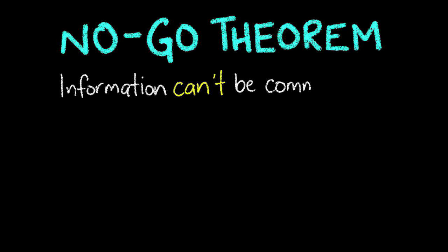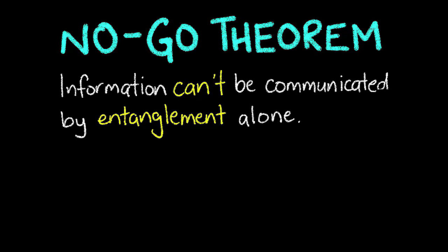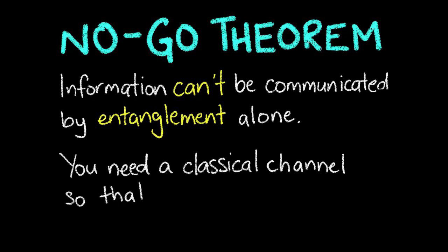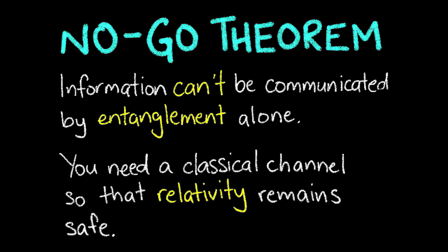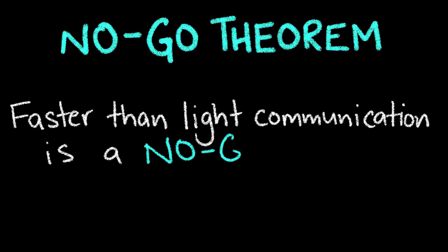We need a classical means of communication like the internet or a phone. A lot of people think that quantum teleportation means that we can communicate faster than the speed of light, but it's not true. Remember that we still need this classical channel to transport some of the information. This is all beautifully encapsulated in something politely called the no-go theorem, which says that information can't be communicated by entanglement alone. You need the classical channel so that relativity remains safe — so faster than light communication is a no-go.